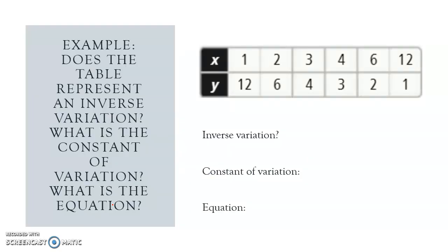We're going to look at an example and ask ourselves: does this table represent an inverse variation? And if it does, what is the constant of variation and what is the equation? What I notice is that as my x's go up, my y-coordinates are going down. That's a good sign for inverse variation. Then I'm going to test by multiplying x times y.